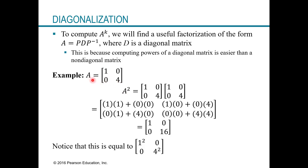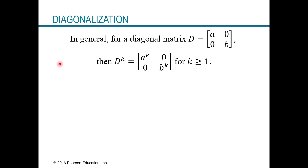This works when the matrix is diagonal to start with. In general, for a diagonal matrix D — with numbers down the diagonal and zeros elsewhere — we can say D to any power is just each diagonal entry raised to that power. This is true for any power of one or more.